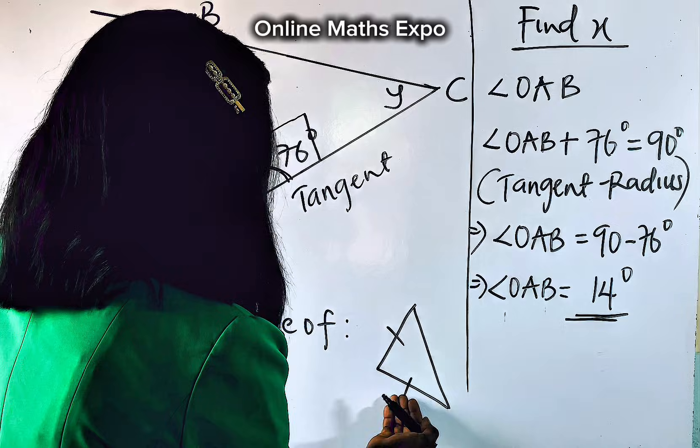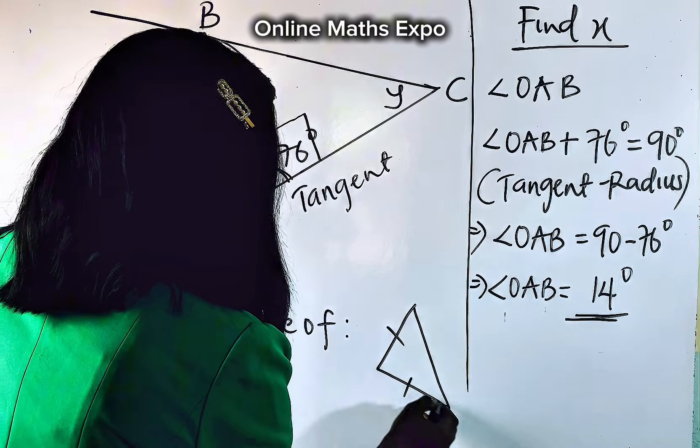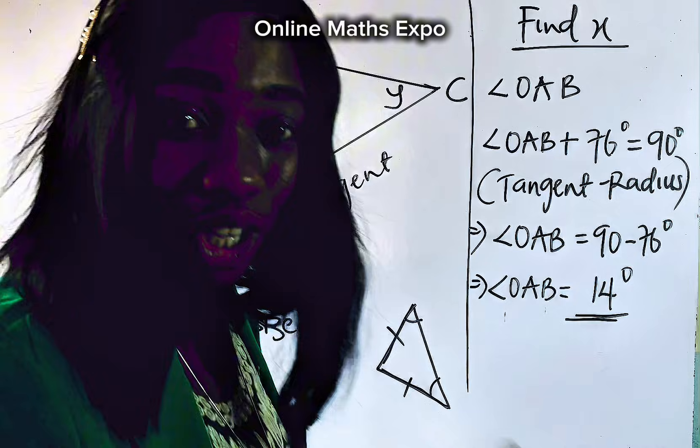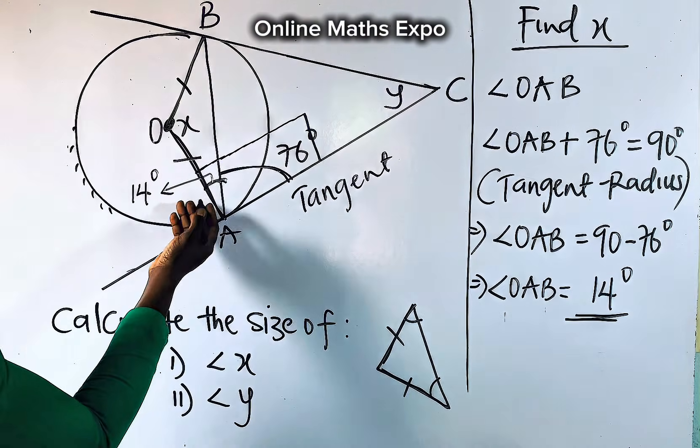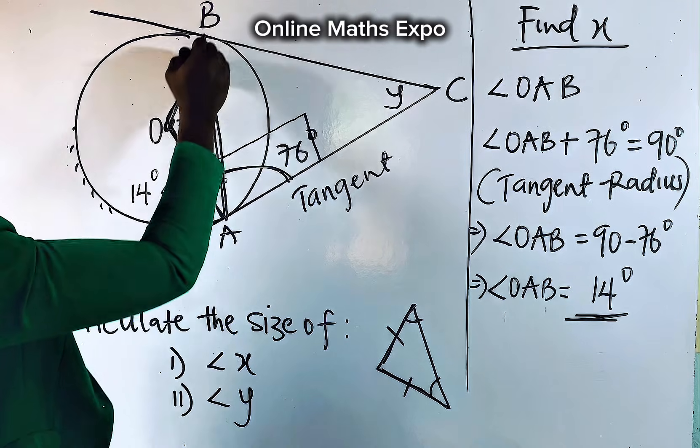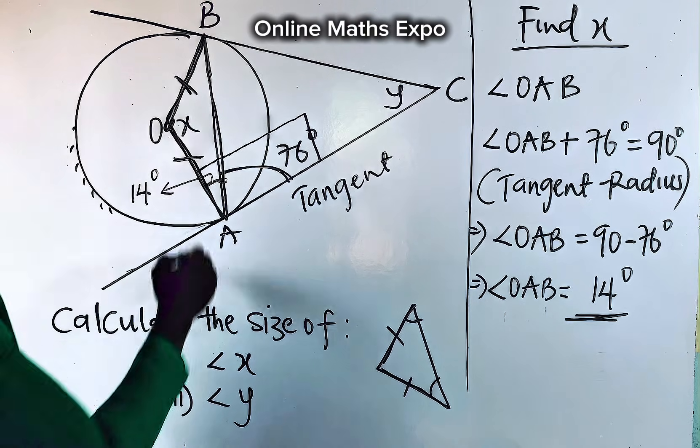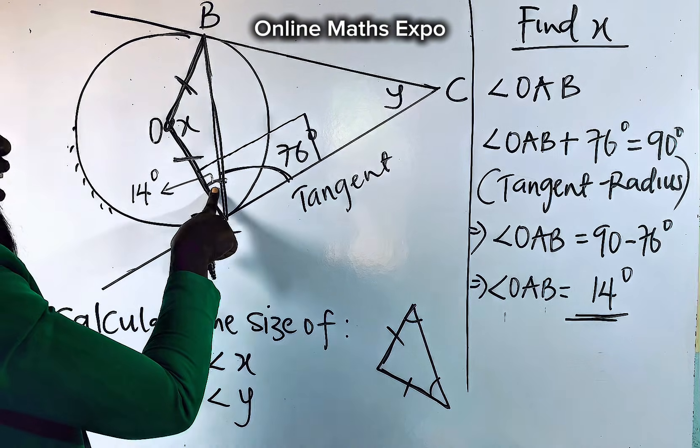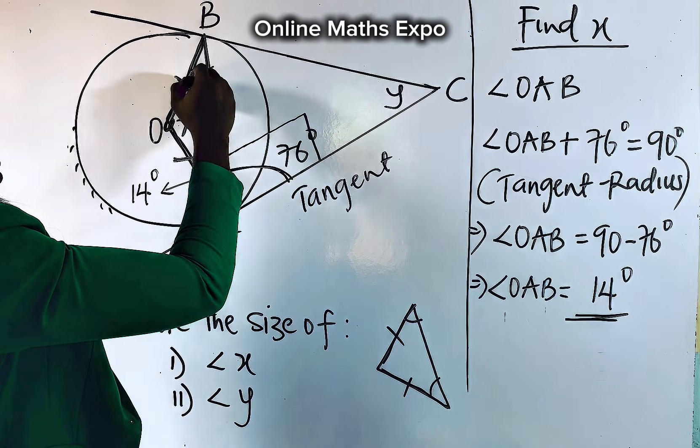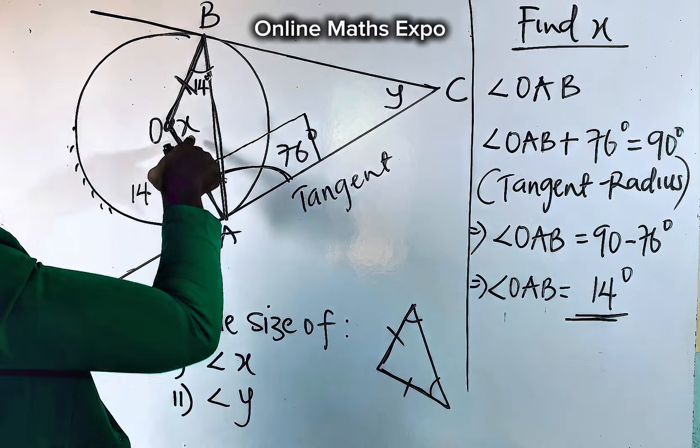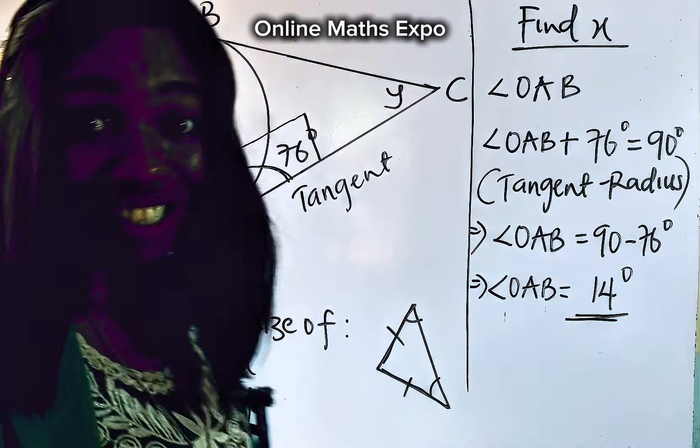And for every isosceles triangle, the base angle of the equal lines, this angle formed here, are also equal. Now, if you go to this diagram, this has given us a triangle and this triangle is isosceles because these two sides are equal. And if this base is 14, automatically this place should also be 14 degrees. And if here is 14 and here is 14, can't we find the value of x? We can.